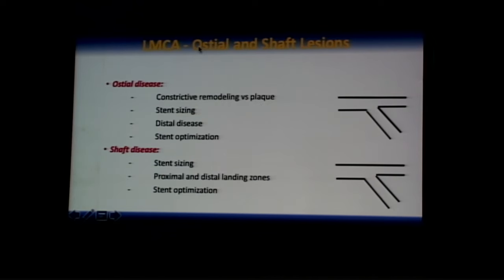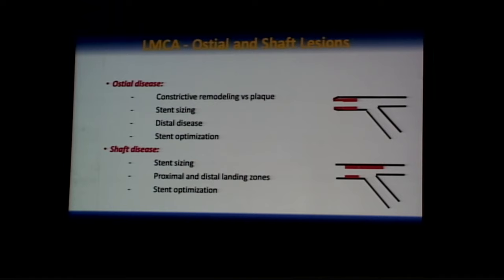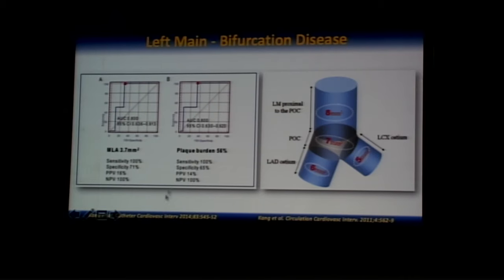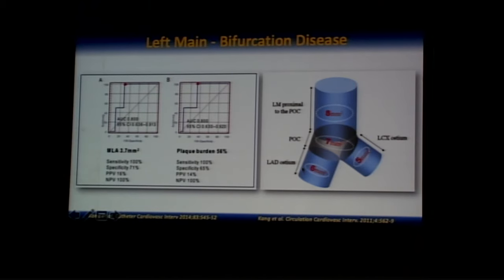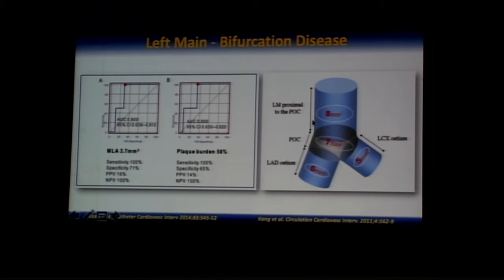For ostial left main disease, IVUS helps differentiate between constrictive remodeling and narrowing due to atherosclerosis. IVUS-identified plaque distribution — whether extending to the ostium or distally — guides how much left main to stent and whether to use left main alone or crossover stenting. For distal left main stenting, plaque burden >56% and MLA <3.7 mm² predict a two-stent strategy. Target stent areas are: 5 mm² at the circumflex ostium, 6 mm² in the LAD, 7 mm² in the polygon of confluence, and 8 mm² proximal to the polygon of confluence.